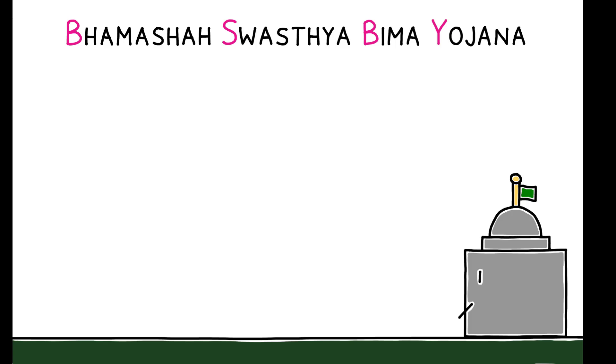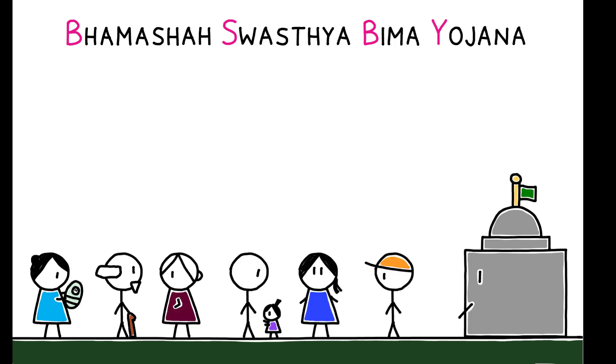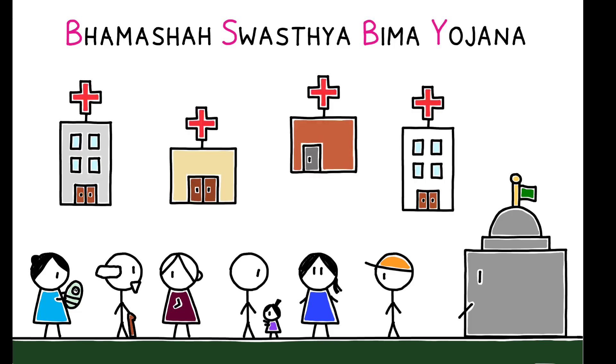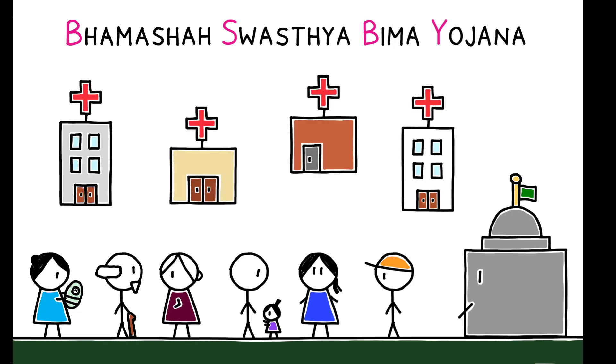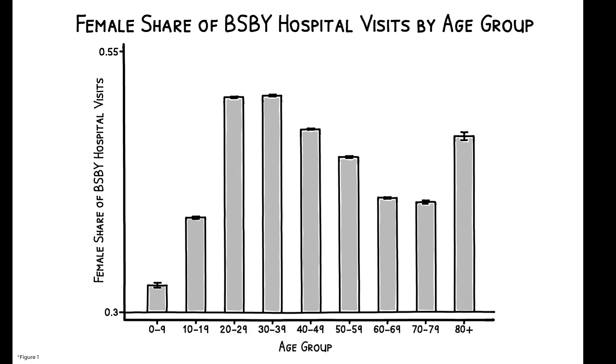The focus is on the BSBY, a government health insurance program that entitles 46 million poor individuals in the state of Rajasthan to free care at public and private hospitals. The paper's data cover all 4.2 million hospital visits that occurred under the program from its launch in late 2015 through late 2019, and there is evidence of large gender disparities.